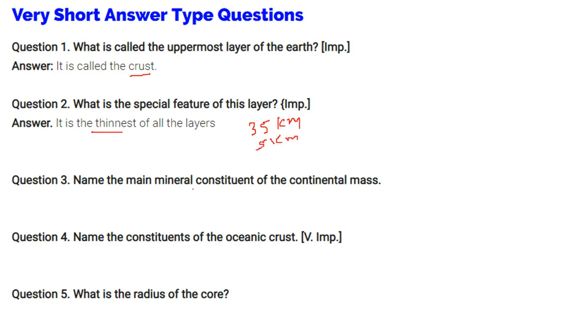Name the main mineral constituents of the continental mass. This is silica and alumina. You can also call it as Si and Al.